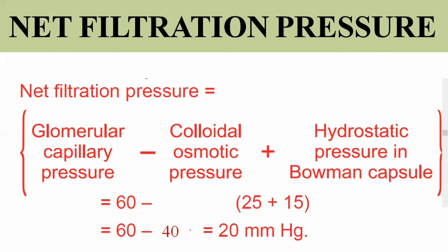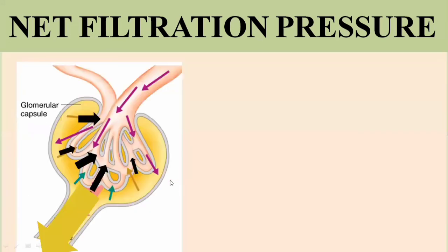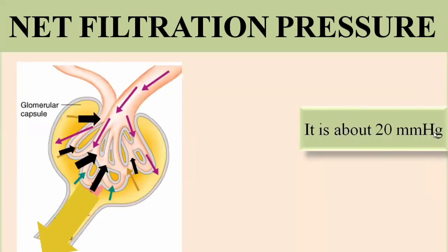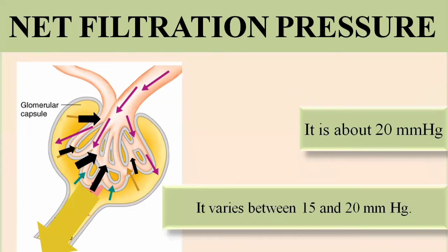This is the normal value, indicating normal filtration and normal formation of filtrate. All these pressures work together for filtrate formation, and the net filtration pressure is approximately 20 mmHg. Values can fluctuate, but the normal range for net filtration pressure is between 15 to 20 mmHg.